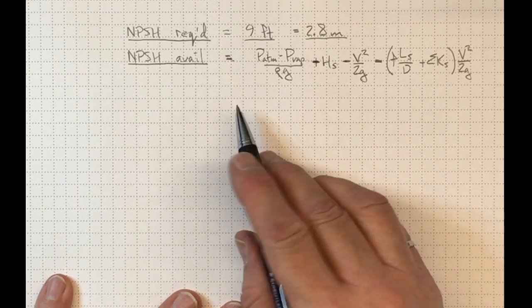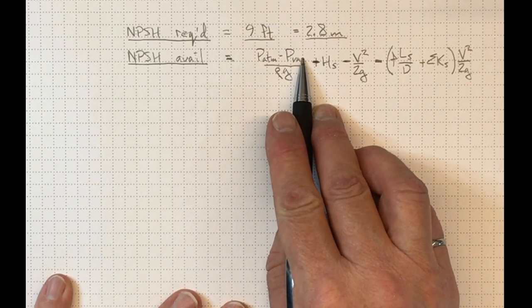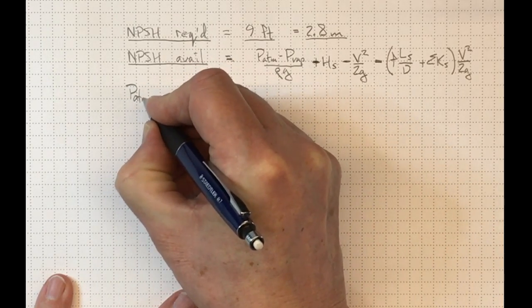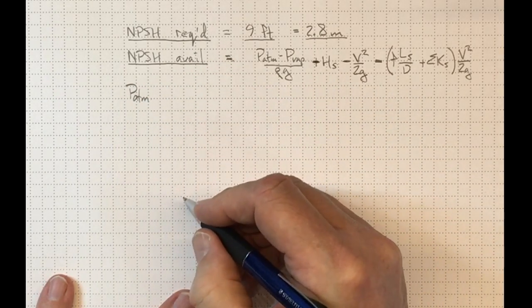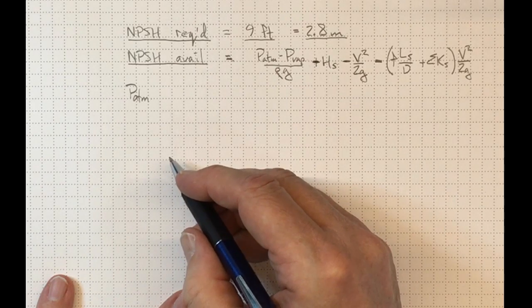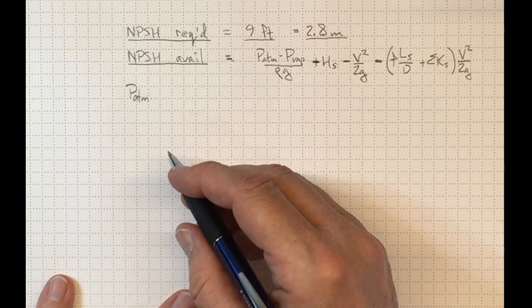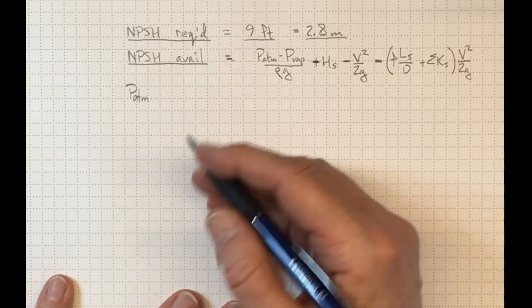So we need to know the atmospheric pressure and the vapor pressure. Well, PATM, we could just choose one standard atmosphere if we knew we were only going to be operating at sea level and on days when the weather was nice. But we'll have to take into account the fact that we, even in Kingston, are a little bit above sea level.